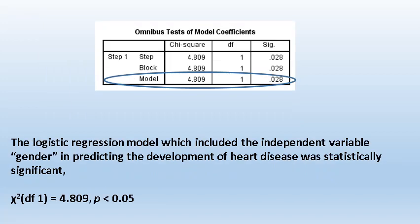Another statistic for model fit is chi-square. The table shows a chi-square value of 4.809, degree of freedom of 1, and a significance value of 0.028. This is statistically significant, meaning the model predicting development of heart disease by including gender as the independent variable was statistically significant, with p-value less than 0.05.